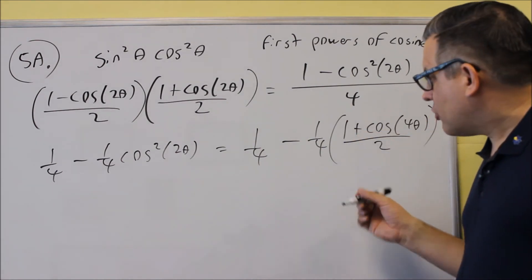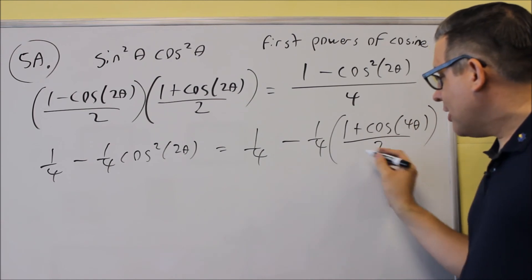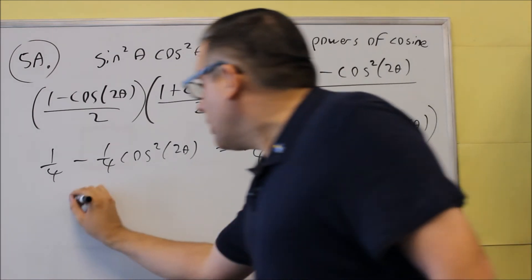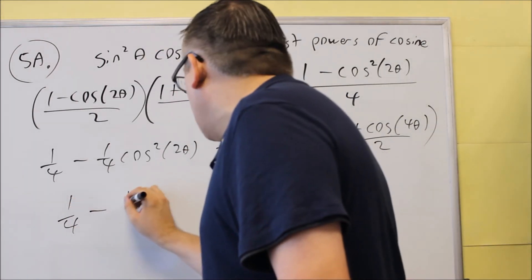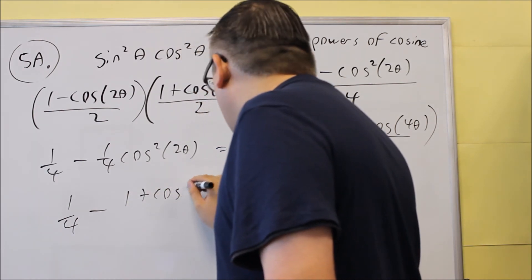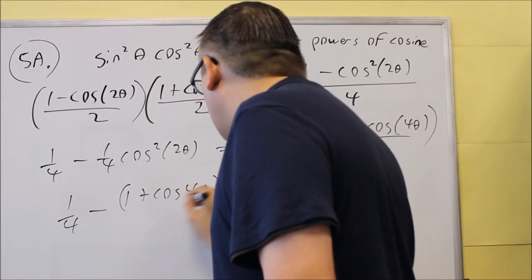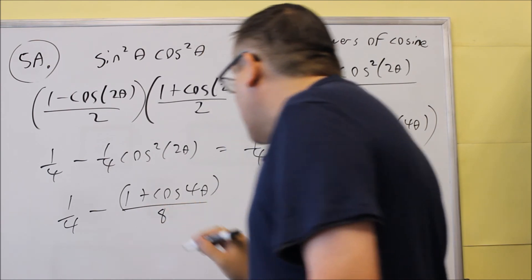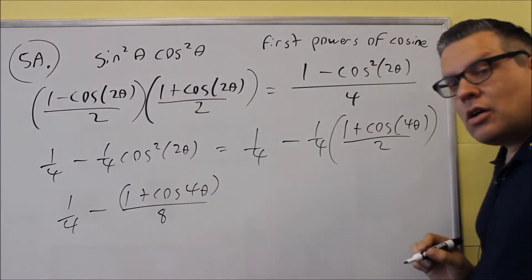The last thing we need to do is just multiply across the top across the bottom and we get 1 quarter minus 1 plus cosine 4 theta, all that, over 8 because we're multiplying the bottom one.